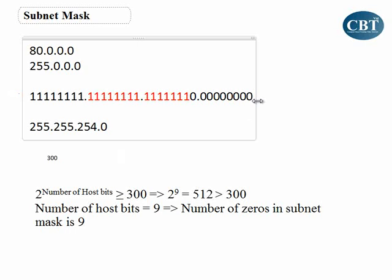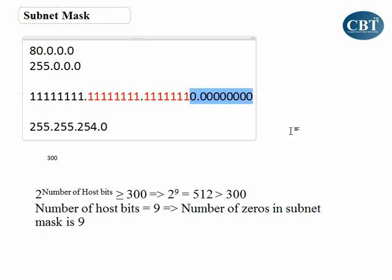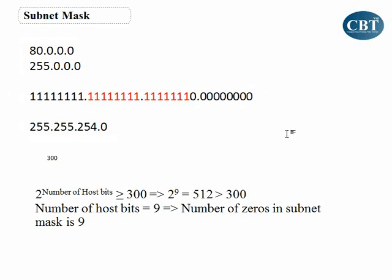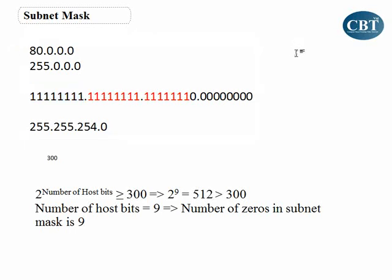Now, given this subnet mask, what is the number of host bits? It's 9. What about the number of network bits? It's not 8+8+7=23 — that's wrong. Remember: the number of network bits is always 8 for Class A, 16 for Class B, and 24 for Class C. It never changes — except in supernetting, which we're not covering here.